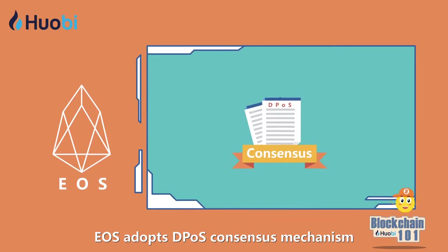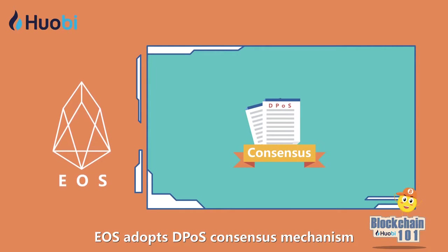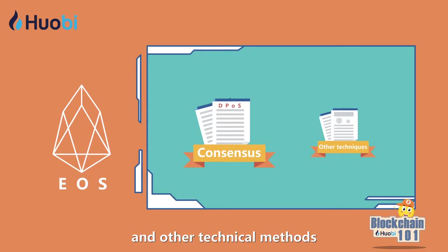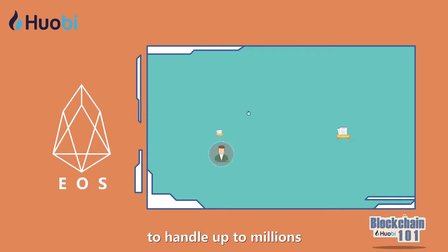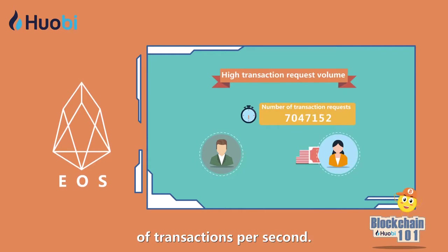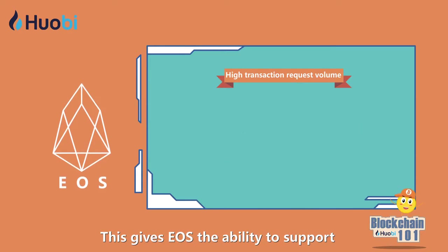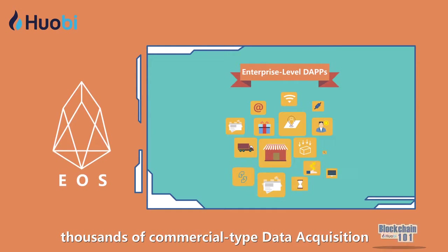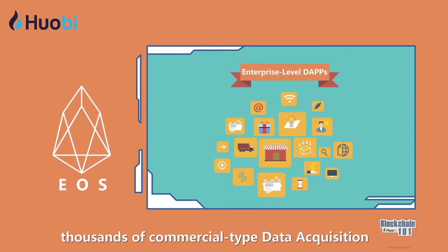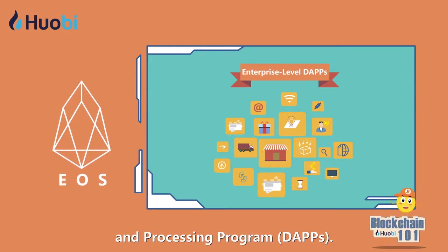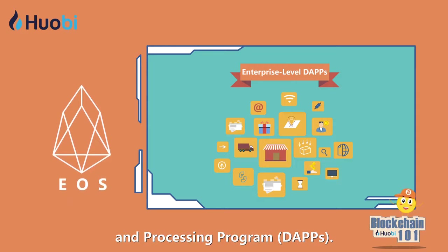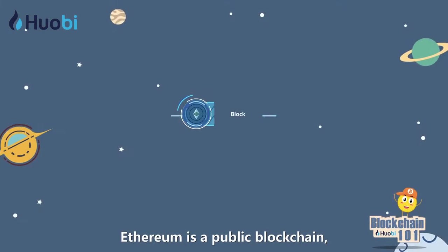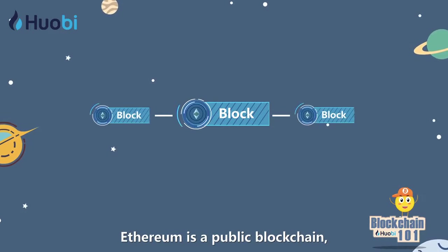EOS adopts a DPoS consensus mechanism and other technical methods to handle up to millions of transactions per second. This gives EOS the ability to support thousands of commercial-type data acquisition and processing programs.